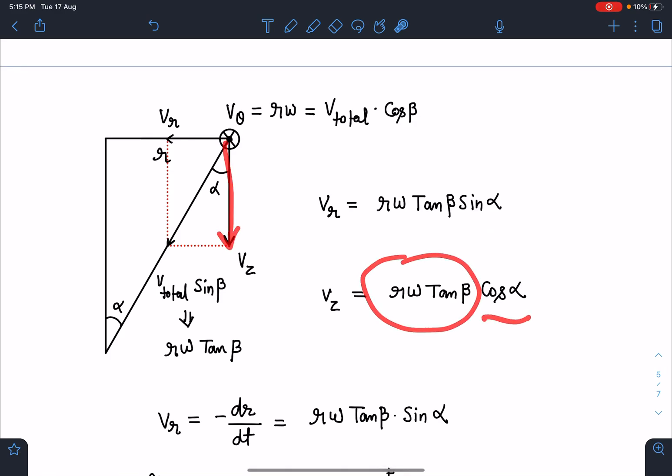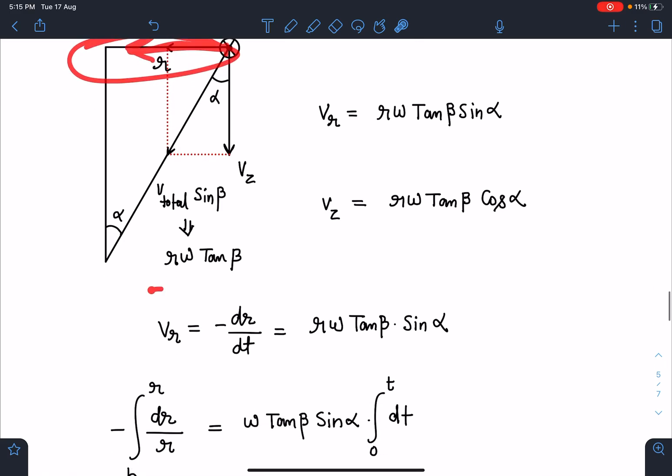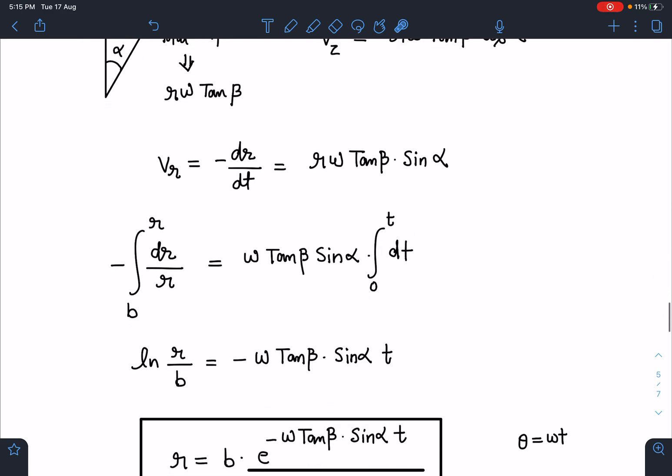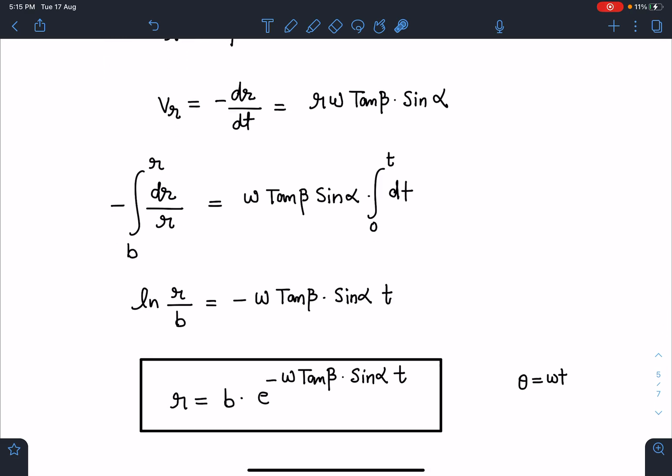I can write V_R as minus dr/dt. When I simplify this, it's a simple integration. Bring r to this side and dt to the other side. Initially r was b and finally at time t this value is r. I'm getting r equals b times e to the power minus θ tan β sin α.